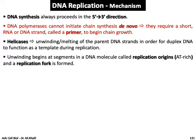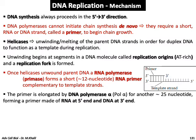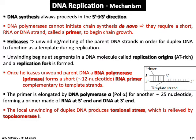Once helicase unwinds the parent DNA, RNA polymerase (also called primase) forms a short primer of around 12 nucleotides complementary to the template strand. The primer is elongated by DNA polymerase alpha for another 25 nucleotides, forming a primer made partly of RNA at the 5' end and DNA at the 3' end. The local unwinding of the duplex produces torsional stress, which is relieved by topoisomerase I.